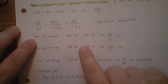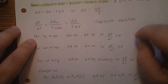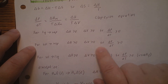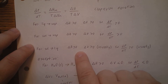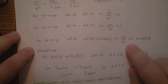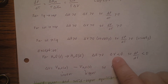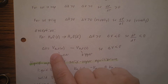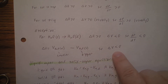Going from liquid to vapor, ΔH > 0 and ΔV > 0, so dP/dT > 0. For solid going to vapor, ΔH > 0 and ΔV > 0, so dP/dT > 0. For solid going to liquid, ΔH > 0 and ΔV is usually greater than zero, so dP/dT is usually greater than zero. One exception is water: going from solid to liquid, ΔH > 0 but ΔV < 0 because the volume of liquid H₂O is smaller than the volume of solid H₂O. So dP/dT < 0 for water.